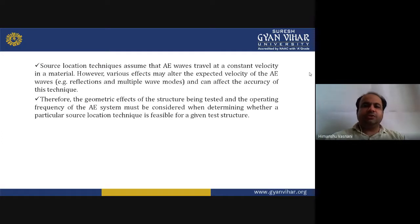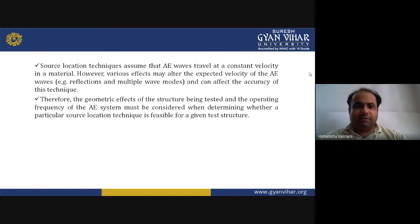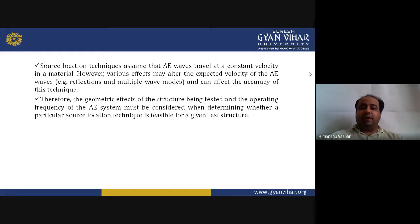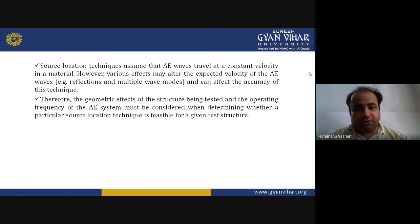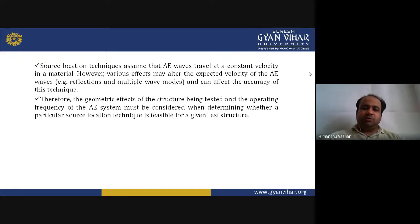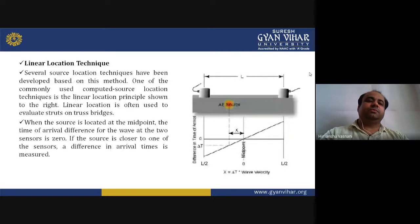Source location techniques assume that acoustic emission waves travel at a constant velocity in a material. However, various effects such as reflections and multi-wave modes may alter the expected velocity and affect the accuracy of the technique. Therefore, the geometric effects of the structure and the operating frequency of the acoustic emission system must be considered when determining whether a particular source location technique is feasible for a given test. Several source location techniques have been developed based on this principle.